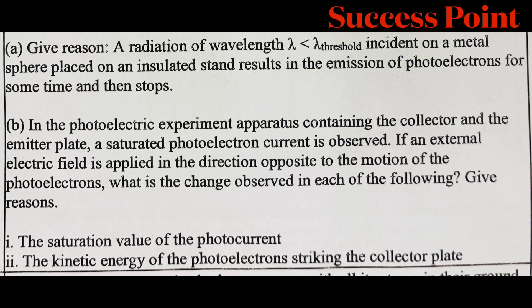Give reason: radiation of wavelength lambda, which is less than lambda threshold, is incident on a metal sphere placed on an insulated stand. This results in the emission of photoelectrons for some time and then stops.